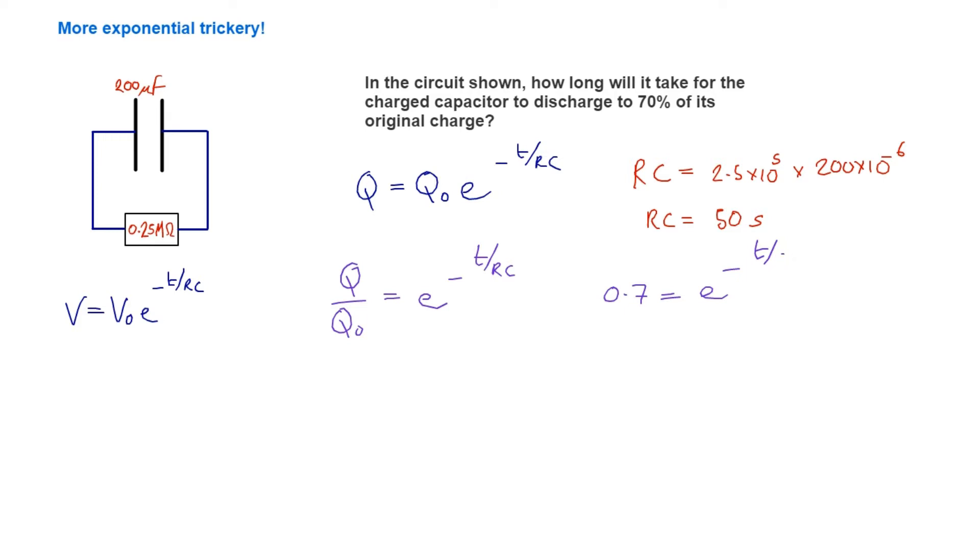so we can put in 50 there for that. The next thing is to take logs, take natural logs. Then we say, the natural log of 0.7 is equal to the natural log of e^(-t/50).